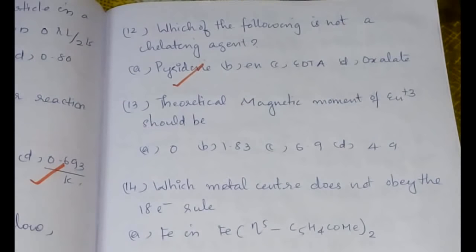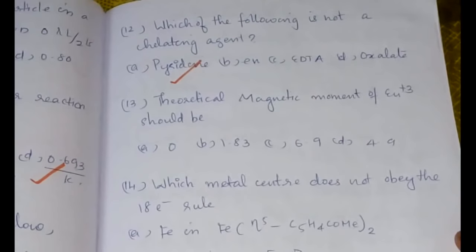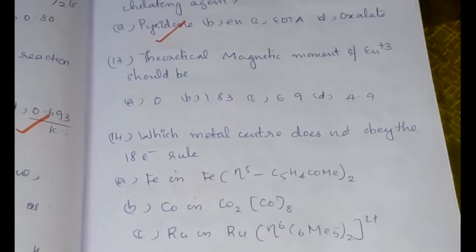The next question is: which of the following is not a chelating agent? The answer is pyridine because it is a monodentate ligand, and no such examples of chelating agent where pyridine is a chelating agent are seen.